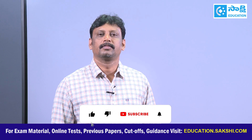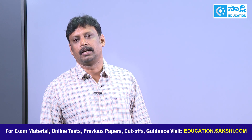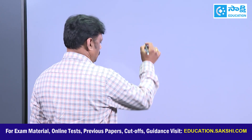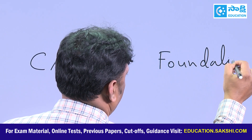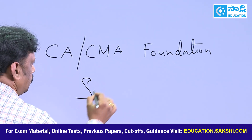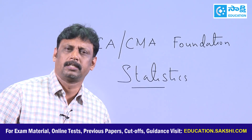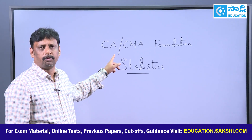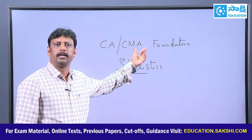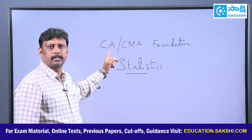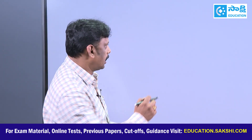A very good morning one and all, this is Praveen Kumar here. I am to present a basic subject on statistics related to CA and CMA foundation. For CA it is for 40 marks and for CMA it is 60 marks coverage. CMA structure is completely objective-based with no negative marking, whereas CA subject is completely objective mode with negative marking. I will be giving you an introduction to the statistics subject.